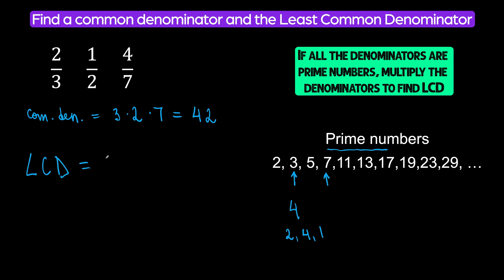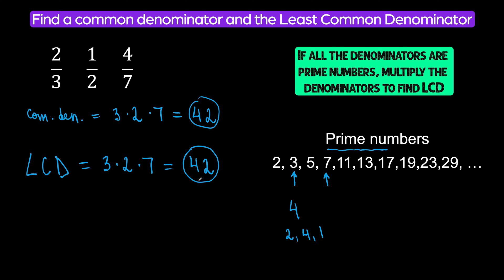When your denominators are prime numbers — we have three, two, and seven — they are prime numbers. To find the least common denominator, you will just multiply your denominators. So when your denominators are all prime numbers, just multiply them: three times two times seven will also be forty-two. You see, the common denominator and the least common denominator matched.